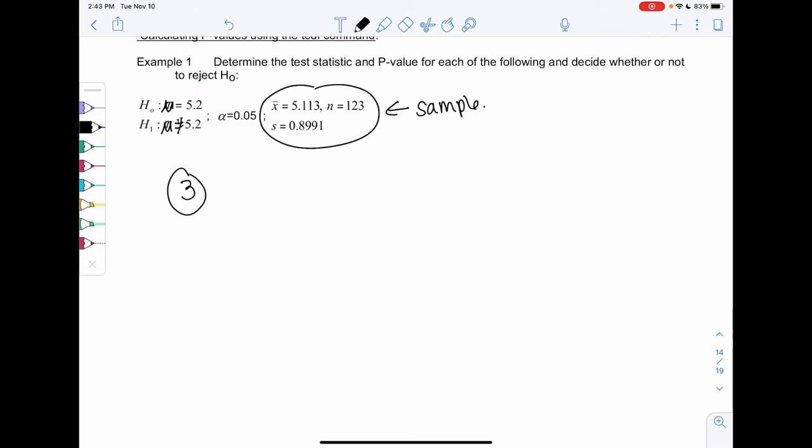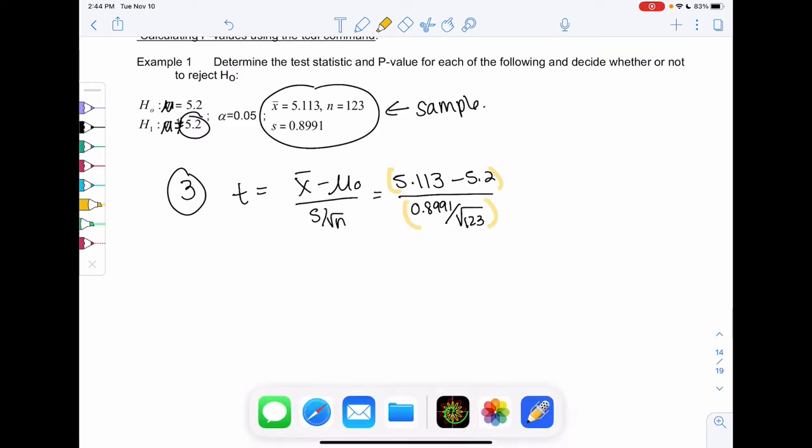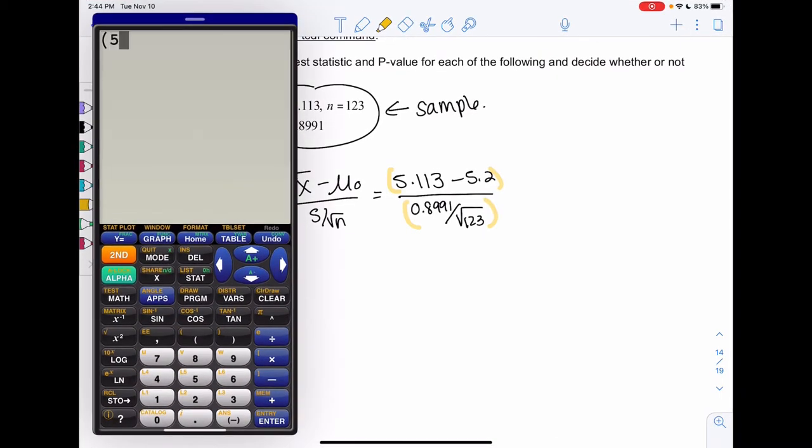Rather than finding a z-score for step 3, we're going to find a t-score. It'll be x-bar minus mu all over s over root n. So 5.113 minus 5.2, the hypothesis value, all over 0.8991, all over square root 123. You absolutely need parentheses on both the top and the bottom here, or you will make an error. You should get negative 1.073. That's called a t-score rather than a z-score.